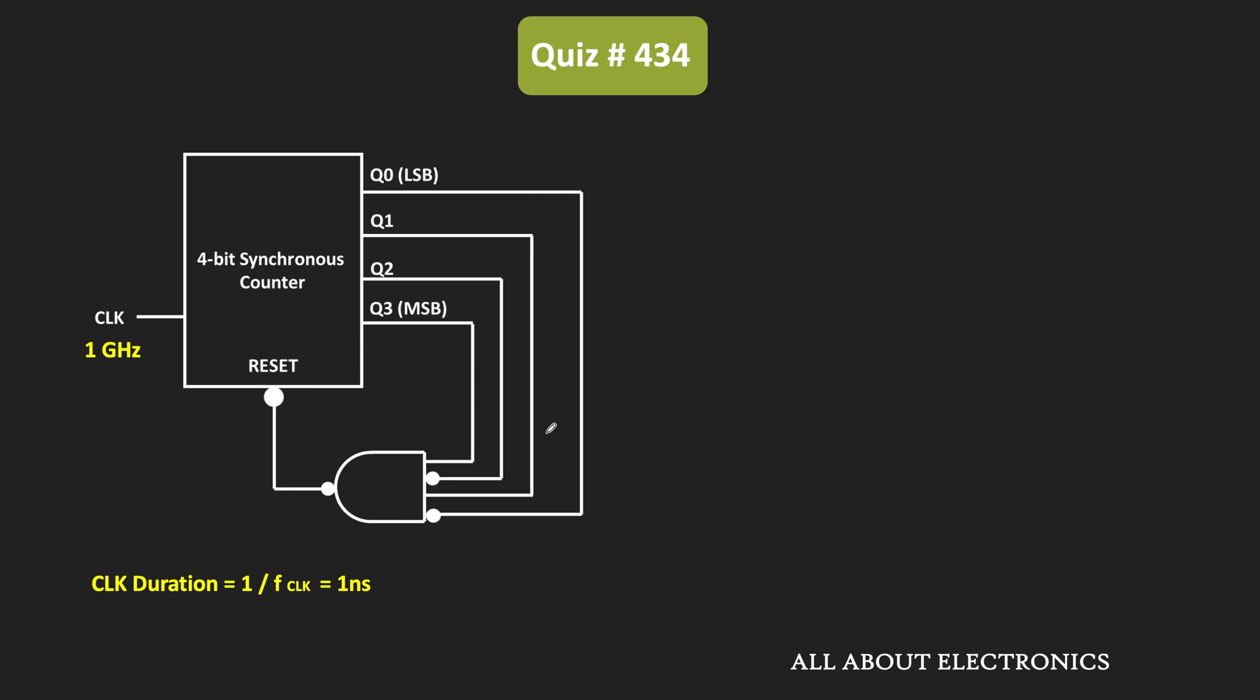On the other end, the propagation delay of this bubbled NAND gate is equal to 4 ns. So here, whenever the output of this bubbled NAND gate is equal to 0, then this counter will get reset.